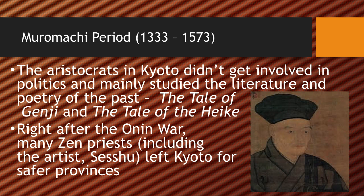The aristocrats were miserable. In Kyoto they didn't get involved in politics, were unhappy with the Ashikaga shoguns' rule, but had no power and faced financial difficulties. So they mainly lived in the past, studying Heian period literature and poetry — reading The Tale of Genji and Tale of the Heike. After the Onin War, many aristocrats and Zen priests, like the artist Sesshu, actually left Kyoto for safer provinces, taking their culture with them, causing the provinces to become more developed.